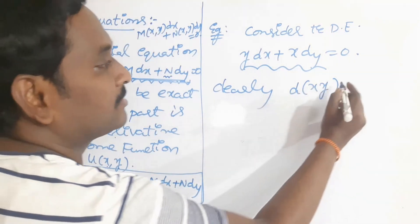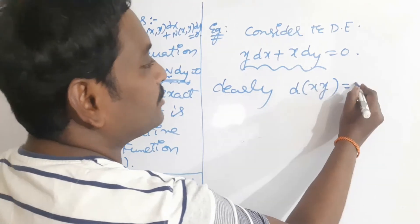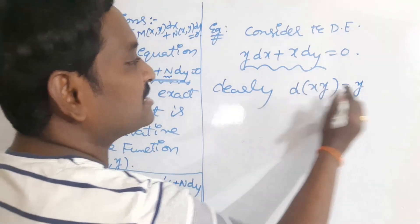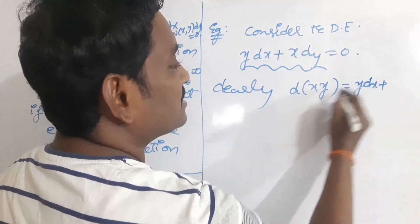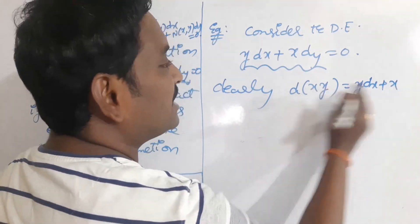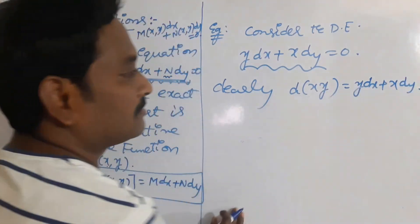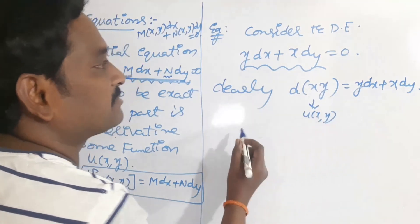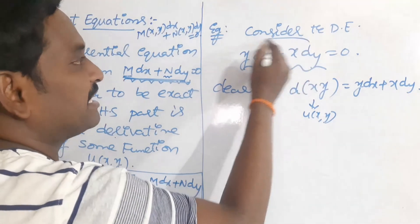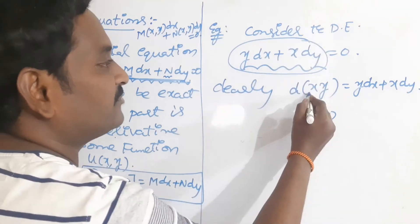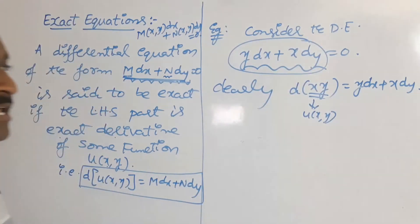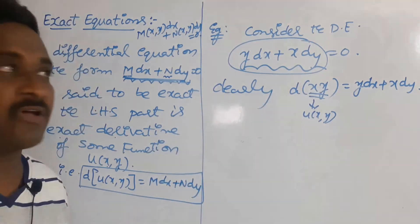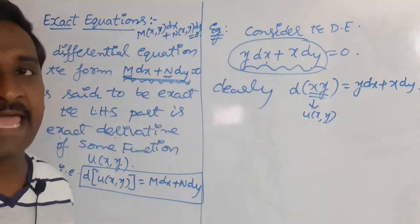Let's verify: take the derivative of xy. By the UV rule, it is y times the derivative of x, which is dx, plus x times the derivative of y, which is dy. So the derivative of xy gives y dx plus x dy. We observe that the left-hand side is the exact derivative of xy, which is why this given equation is exact.